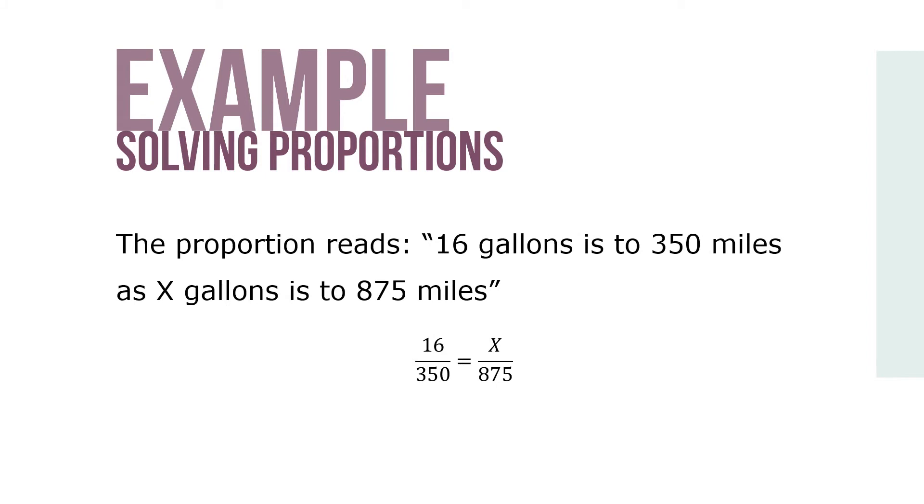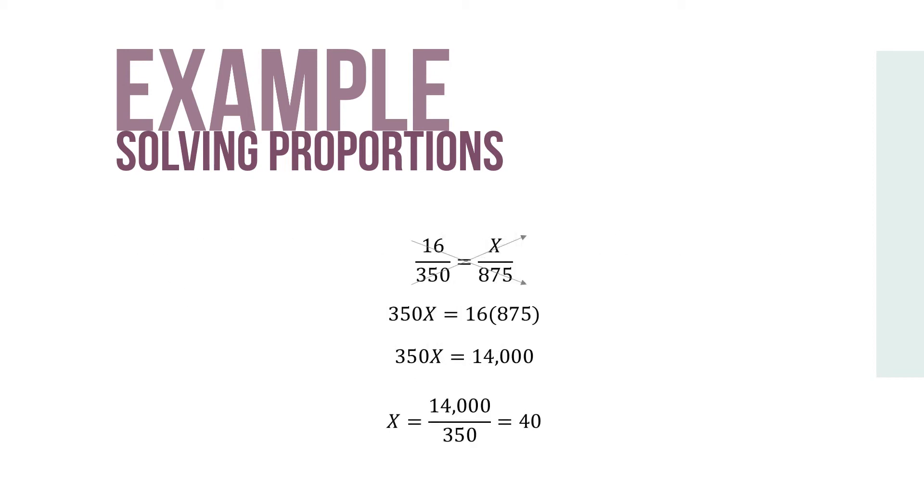The situation can be solved by setting up and solving a proportion. The proportion reads 16 gallons is to 350 miles as x gallons is to 875 miles. Using cross multiplication to solve the problem, we get x equals 40.